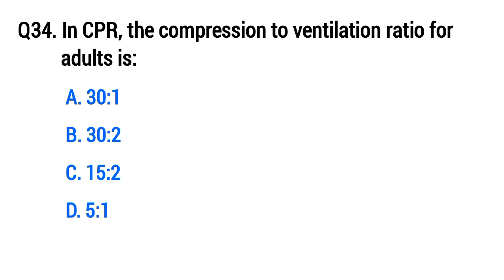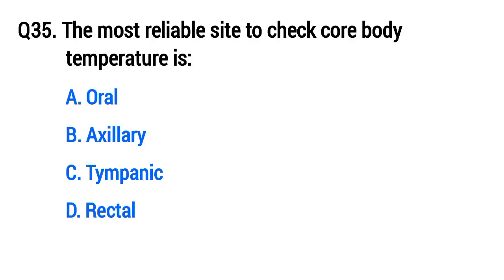Question 34: In CPR, the compression to ventilation ratio for adults is... The right option is B, 30 to 2.